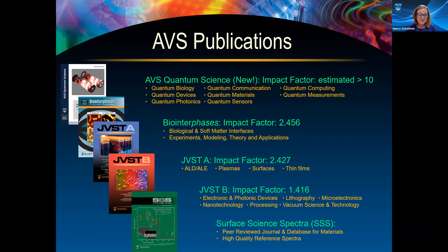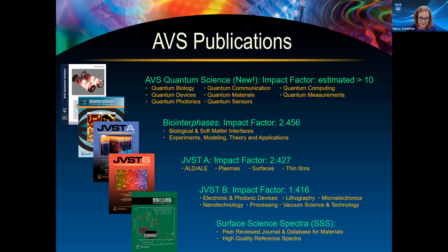Remember, you're typing in the chat and the first one to type the correct answer wins a $25 Amazon gift card. The first journal trivia question is: which AVS journal recently published a special topic collection on biomimetics? Type your answer into the chat box. You can cheat by looking at my first slide. We got a winner — April answered 'Biointerphases.' That's correct! Congratulations, April.